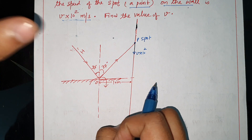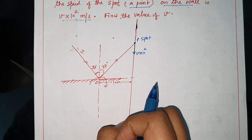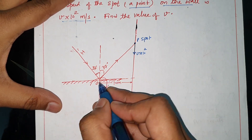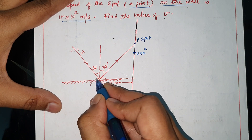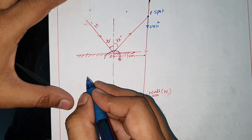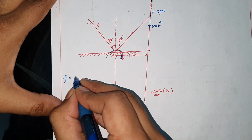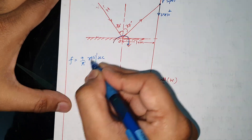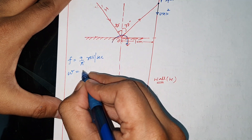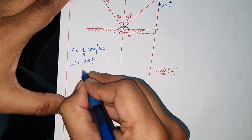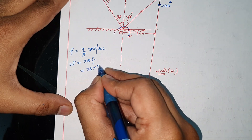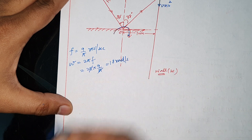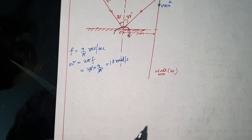If we look at the spot, we need to find the frequency. The frequency is 9/π revolutions per second. So the angular frequency ω = 2πf = 2π × (9/π) = 18 radians per second.